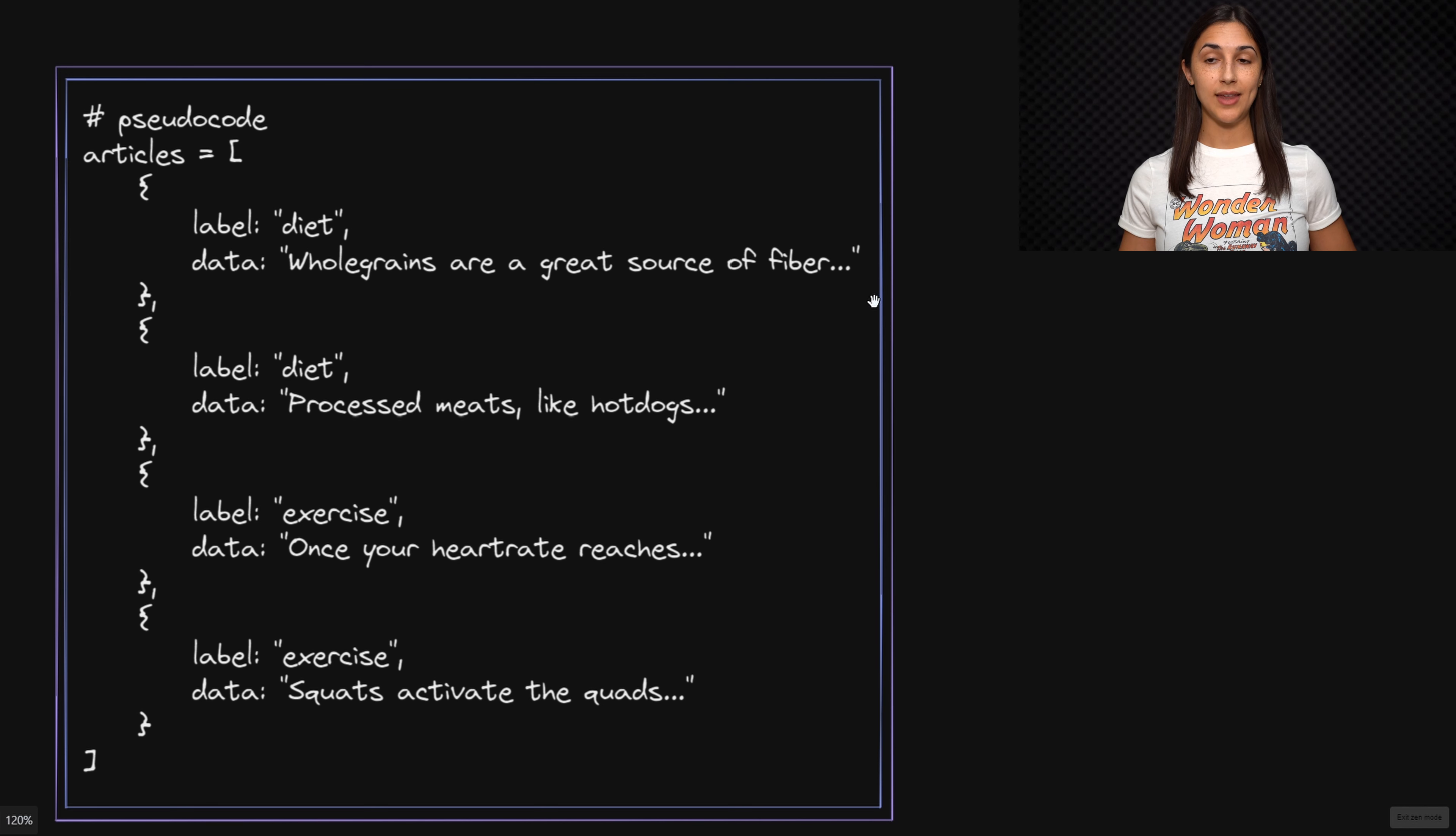Here we just have a few examples where we have this first article that has some text that says whole grains are a great source of fiber, and this article has been labeled as a diet article. On the other hand, we have some other articles like this one that has the text squats activate the quads, and this article has been labeled as exercise. So we pass this data with the corresponding labels to the learning algorithm.